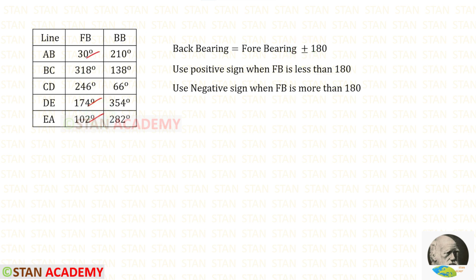These three bearings are less than 180, so with them we have to add 180. When we do that, we will get the backbearing. These two readings are more than 180, so from them we have to subtract 180. When we do that, we will get the backbearing.